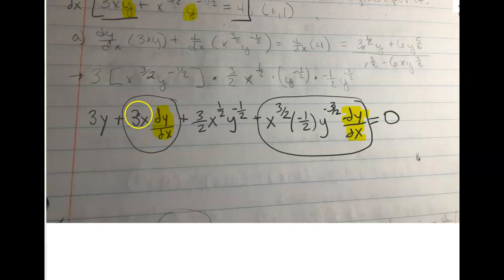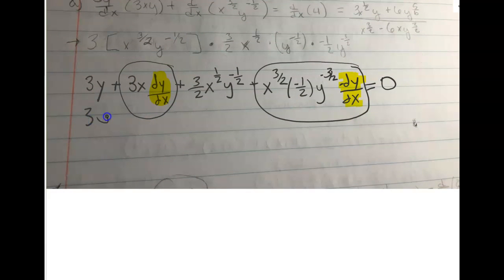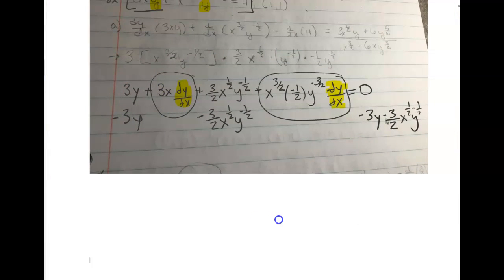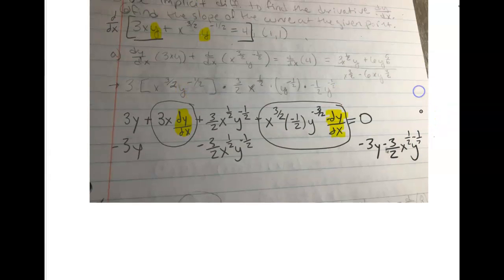Then factor out my dy over dx. I would subtract the 3y from this side and minus 3 over 2x to the 1 half y to the minus 1 half. So over here, I'd have a minus 3y and a minus 3 over 2x to the 1 half y to the minus 1 half. This is looking a little complicated, but keep in mind, at the very end, you're just going to plug in x is 1 and y is 1.